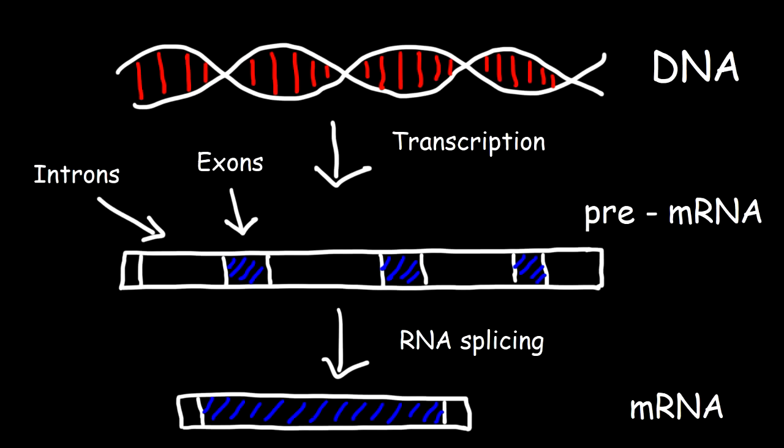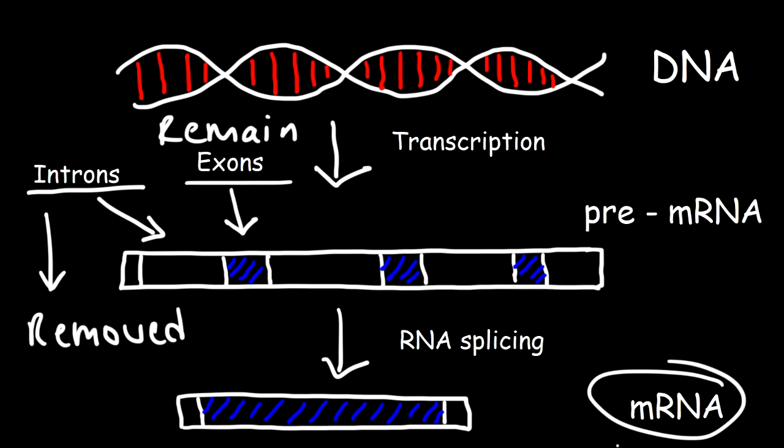At the end of the termination step during transcription, DNA has been used to create a pre-messenger RNA strand. This particular strand has something known as introns and exons. Introns are basically longer sequences of nucleotides that do not code for anything, so they must be removed in a process known as RNA splicing. The exons are shorter sequences of nucleotides that are going to be used to synthesize proteins. The exons remain, but the introns must be removed. And so now we have a completed messenger RNA strand.